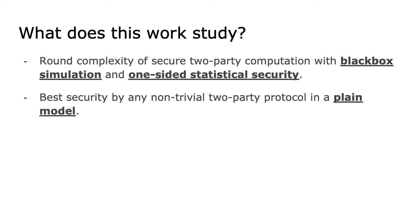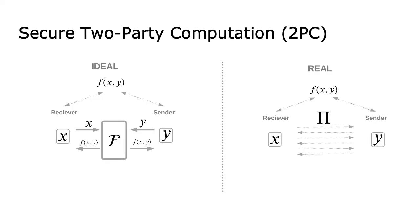Let's begin by looking at what is secure two-party computation. As the name suggests, it is a protocol between two parties. Each party has their secret inputs and they would like to evaluate a function on these inputs. This function may generate outputs for both parties. In an ideal world, if the parties have access to a trusted third party, then this problem becomes trivial because even if one party is adversarial, they will learn nothing about the input of the other party.